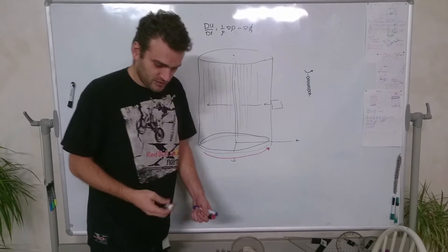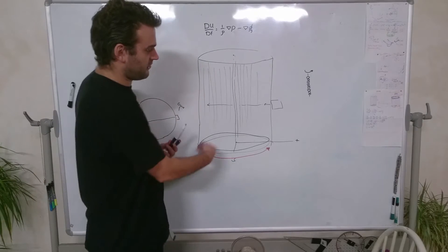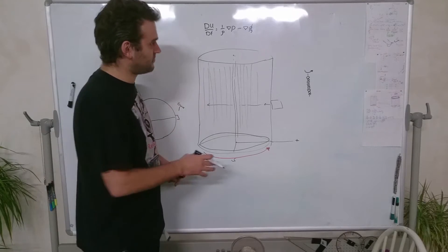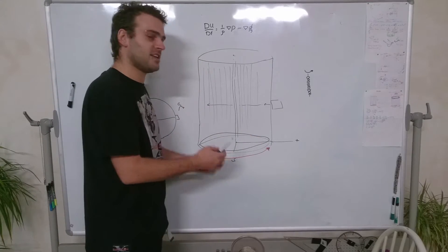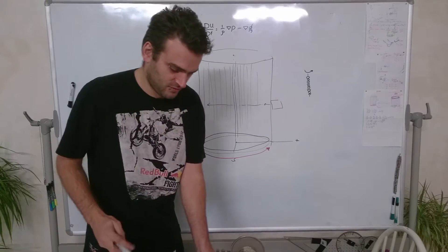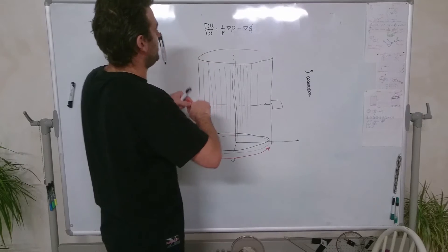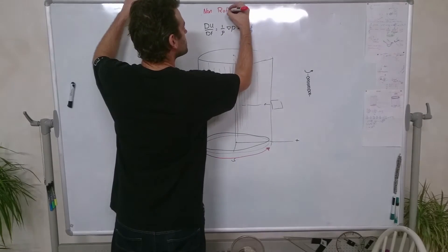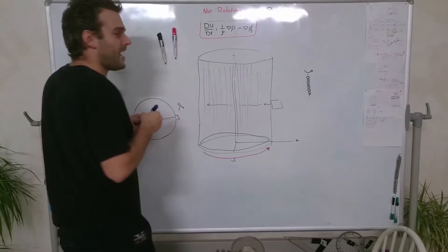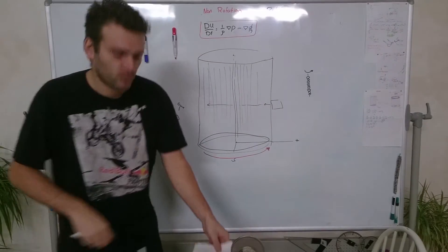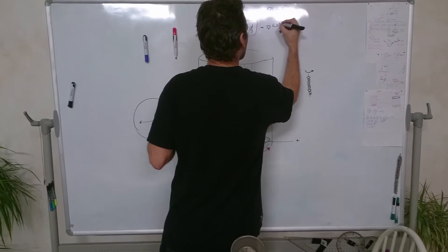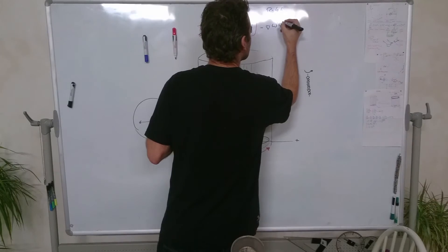Whenever we have a rotating fluid, we get two extra forces. We call the original part the non-rotation case. When we add rotation, we add to the equation the delta function of omega squared times radius squared divided by two. This represents the kinetic energy of the rotation.